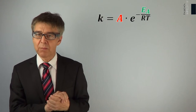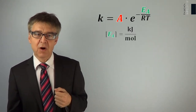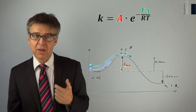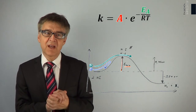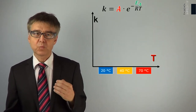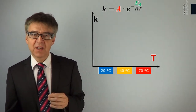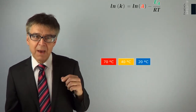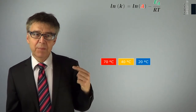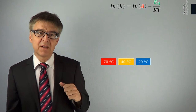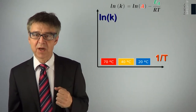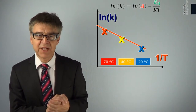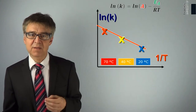With these two parameters, the temperature dependence of a process may be completely described. The activation energy corresponds to the energy barrier in the reaction profile, which must be exceeded for the process to run. The frequency factor corresponds to the limit of the rate constant at infinitely high temperature. A direct plot of k versus T yields the Arrhenius exponential function. This function can be linearized by plotting the logarithm of the rate constant against the reciprocal of the temperature — the famous Arrhenius plot. The slope of the line is related to the activation energy, and the axis intercept is related to the frequency factor.